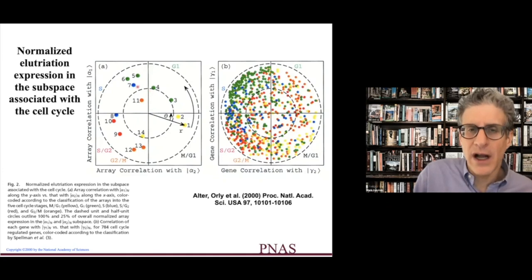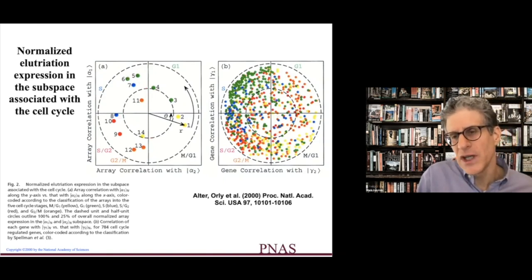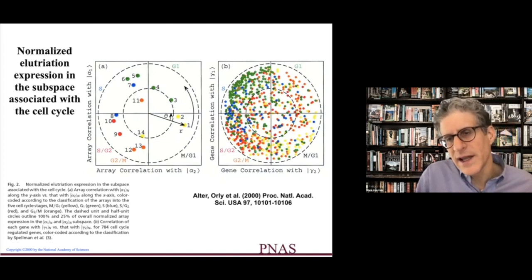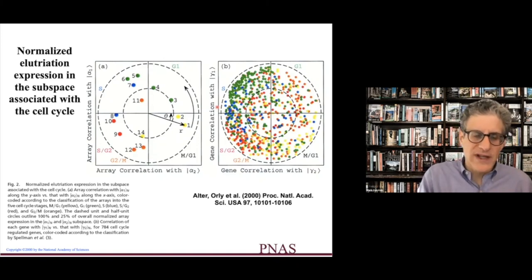And then we can actually, if we color each of these conditions by what quadrant they're in, we can also take the genes and project them onto the top two eigen genes. And then we can see that the genes that say mostly correlate, say they correlate mostly in this quadrant, they tend to be the genes that would tend to correspond to the genes that go on in this array condition and so forth. So it's a very kind of nice way of looking at this periodic process in terms of these eigen arrays and eigen genes.